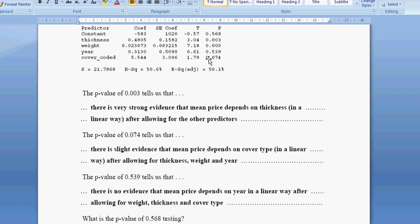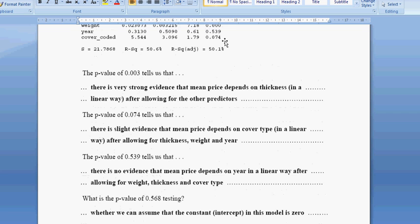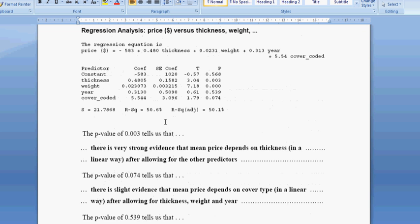This one here, it's not a low p-value, but it's not actually a high enough p-value to totally accept the null hypothesis. So there's some evidence to reject the null. And this one here is this one here. So there's slight evidence to, if you reject the null, you're saying that there is a relationship. So there's slight evidence to say that mean price depends on cover type in a linear way.